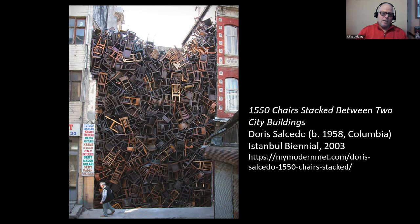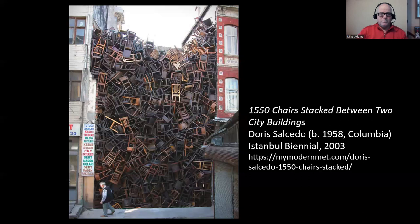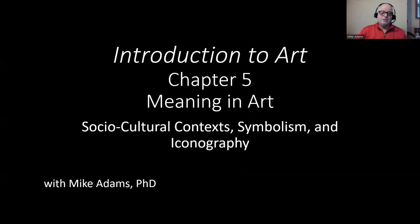Welcome back. What are we supposed to make of a work of art like this? 1,550 chairs stacked between two city buildings by Doris Salcedo. We're going to return to this work of art at the very end of this mini lecture. Just keep this in mind — how you might interpret it, what it might mean, given the fact that the title is purely descriptive and not hinting at any sort of meaning, as far as we can tell so far.